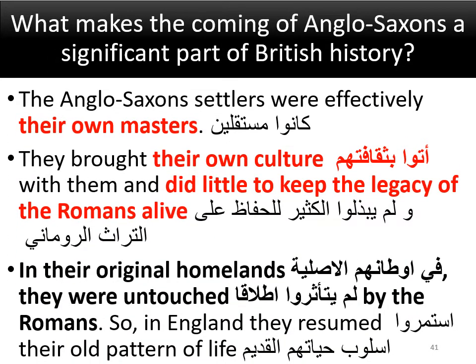What makes the coming of the Anglo-Saxons a significant part of British history? The Anglo-Saxon settlers were effectively their own masters. They brought their own culture and did little to keep the legacy of the Romans alive. In their original homelands they had been untouched by the Romans, so in England they resumed their old pattern of life.